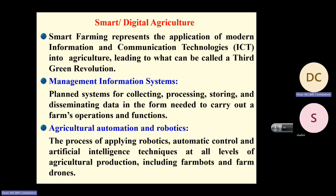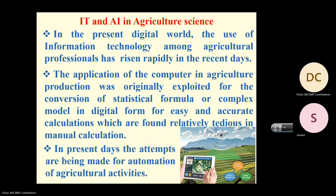IT and AI in agriculture: in the present digital world, the use of IT among agriculture professionals has increased in recent years. The application of computers in agriculture was originally exploited for converting statistical formulas or complex models into digital form for easy and accurate calculation, which was relatively tedious in manual calculation. In present days, attempts are made for automation of agricultural activities.